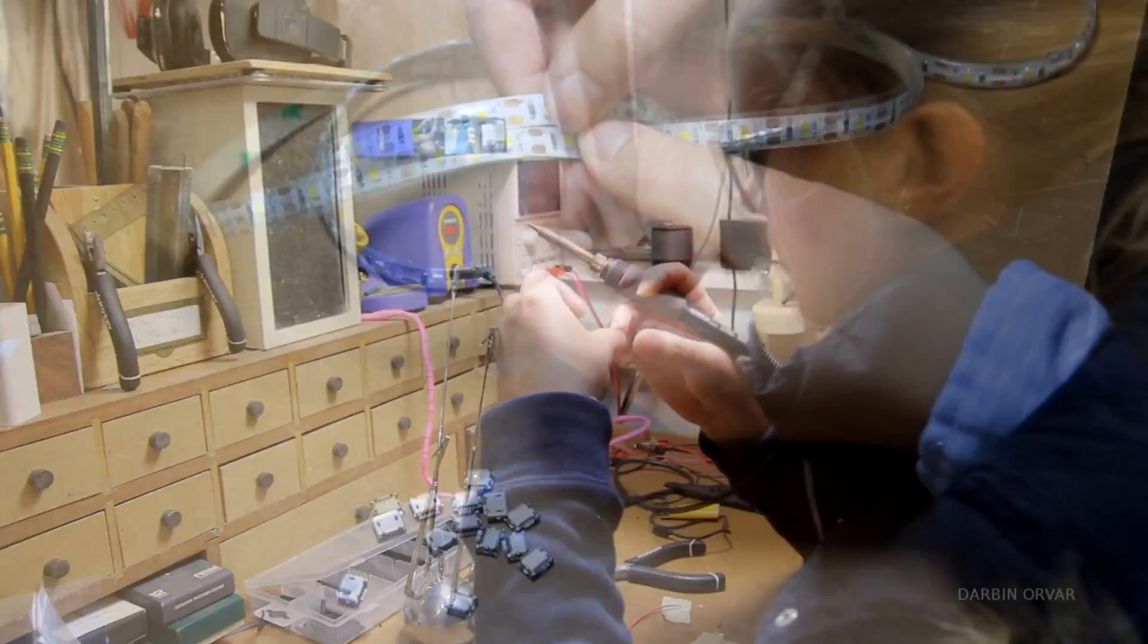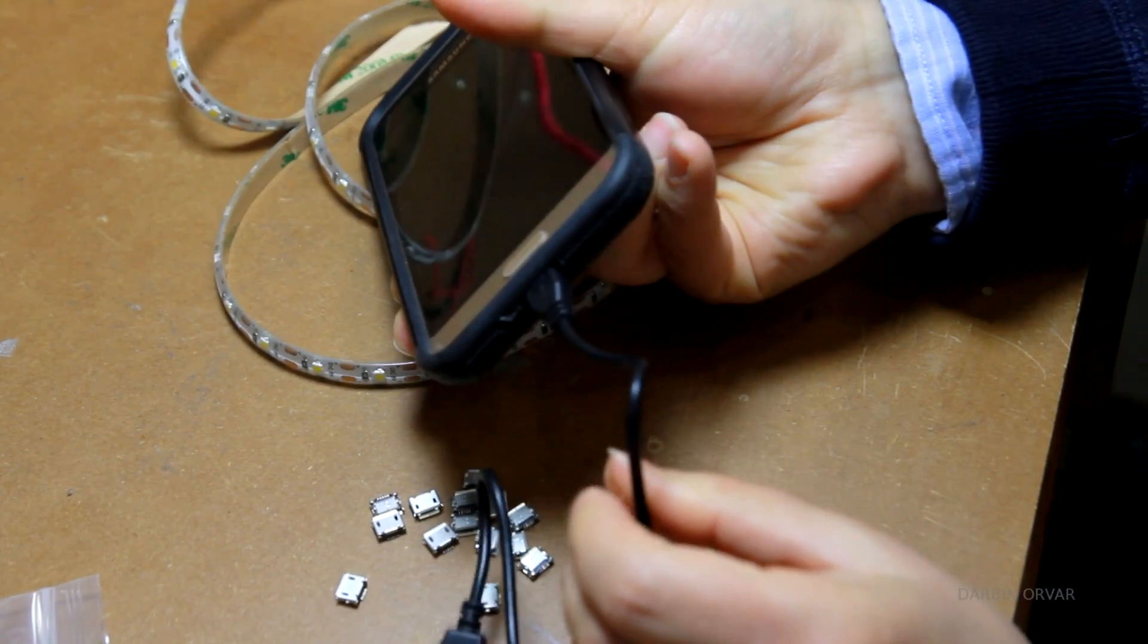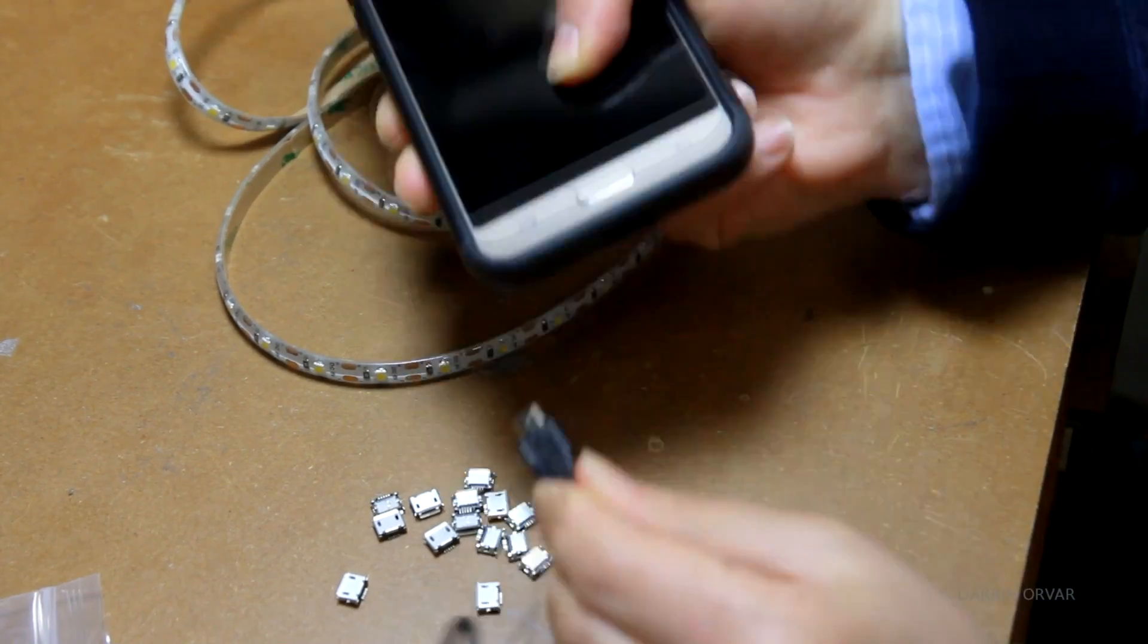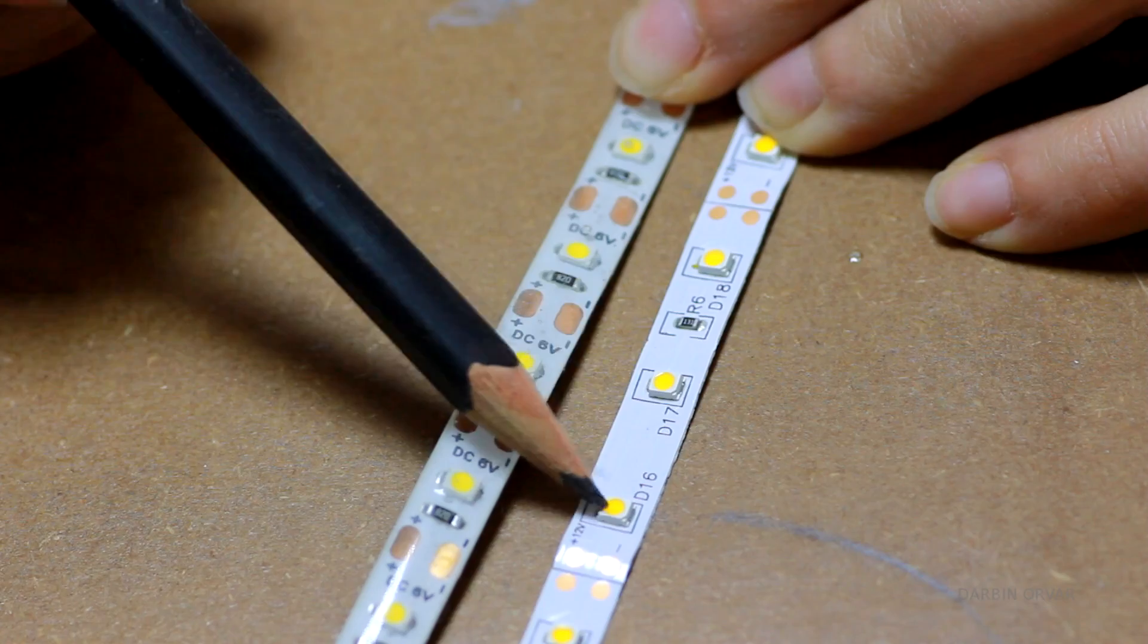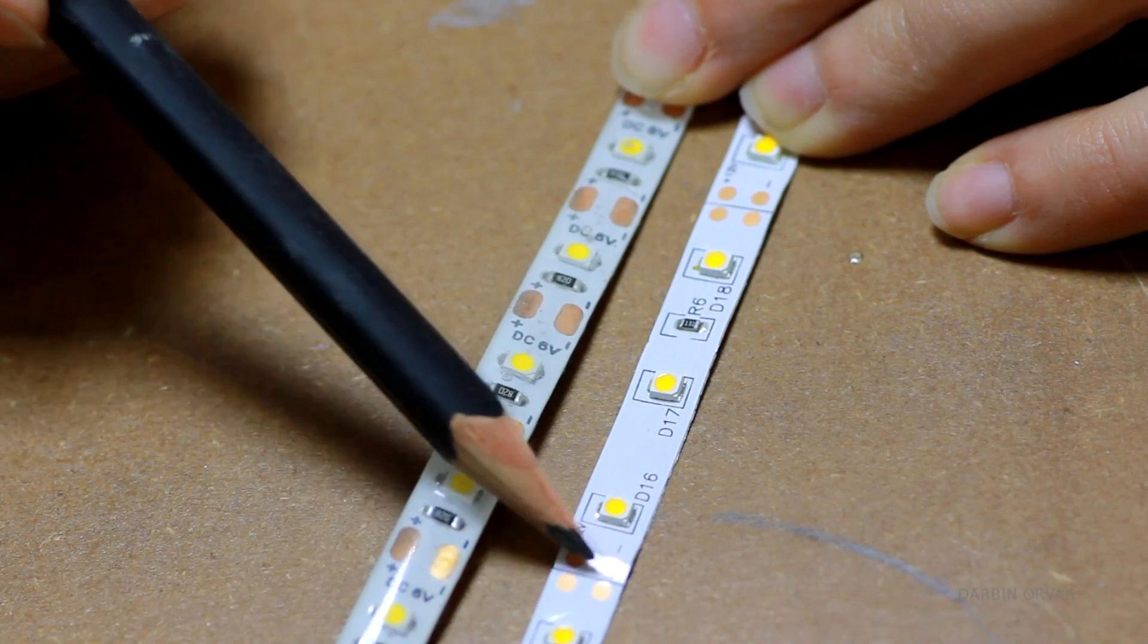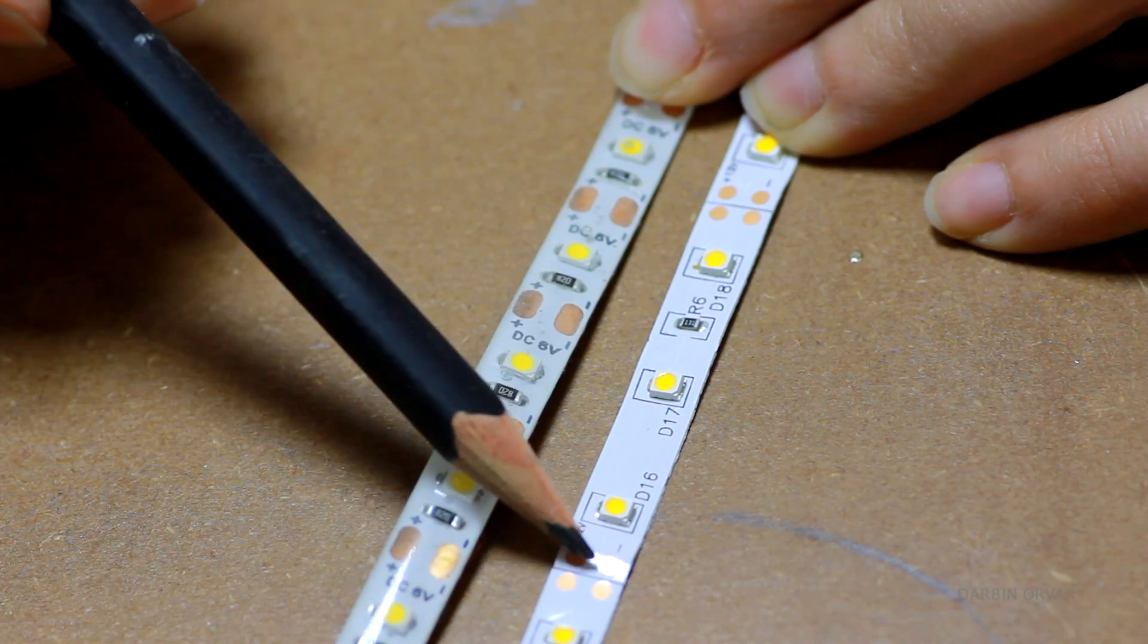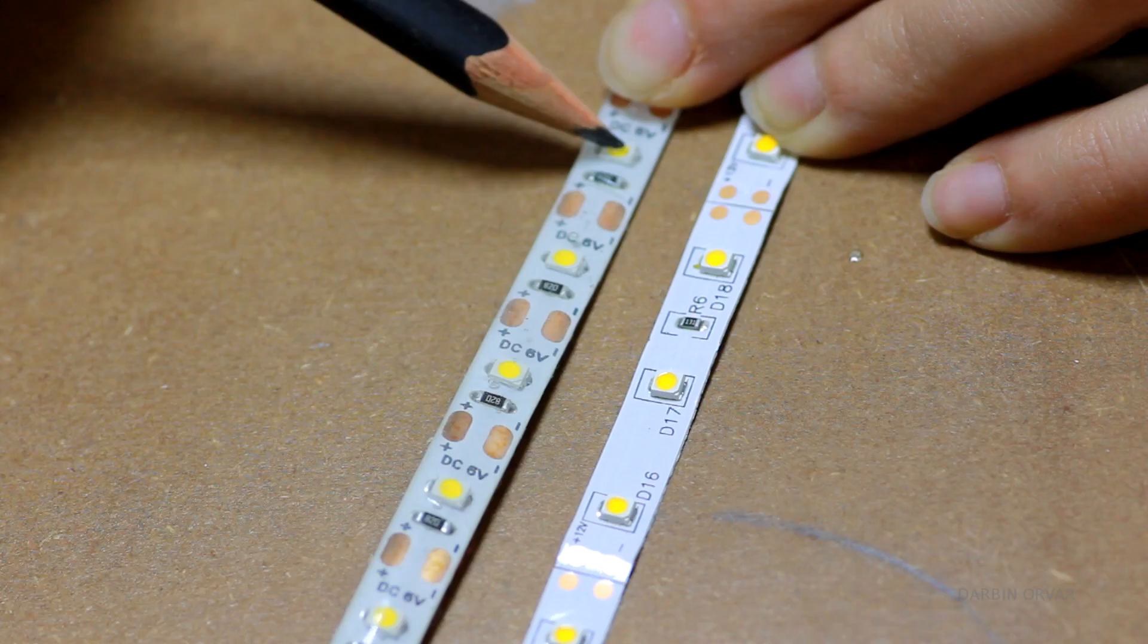For this project, I'm going to be using these 5V LED strip lights. These are really cool because you can power them with a common 5V phone charger. Here's the regular 12V LED strip on the right for comparison. There we have three lights in series, and every connection is a parallel connection. Whereas on the 5V strip, they are all parallel, with only one light and resistor per section.